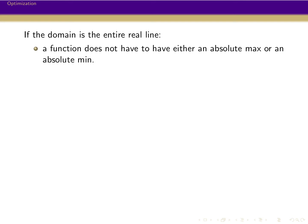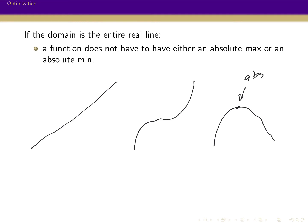Some quick examples: if you think about something like a line or a cubic, neither of these have highest values or smallest values. If you have something like a downward parabola, this has an absolute max but no absolute min. So to actually have a function that has both an absolute min and an absolute max, you have to have something special going on.